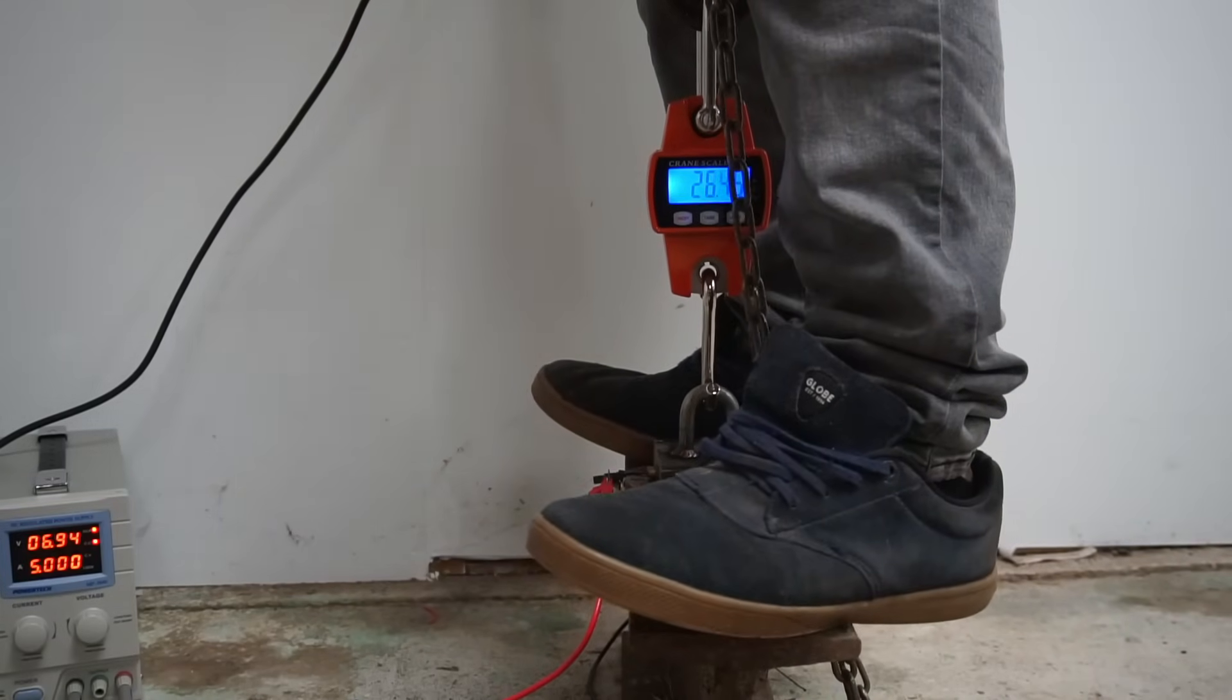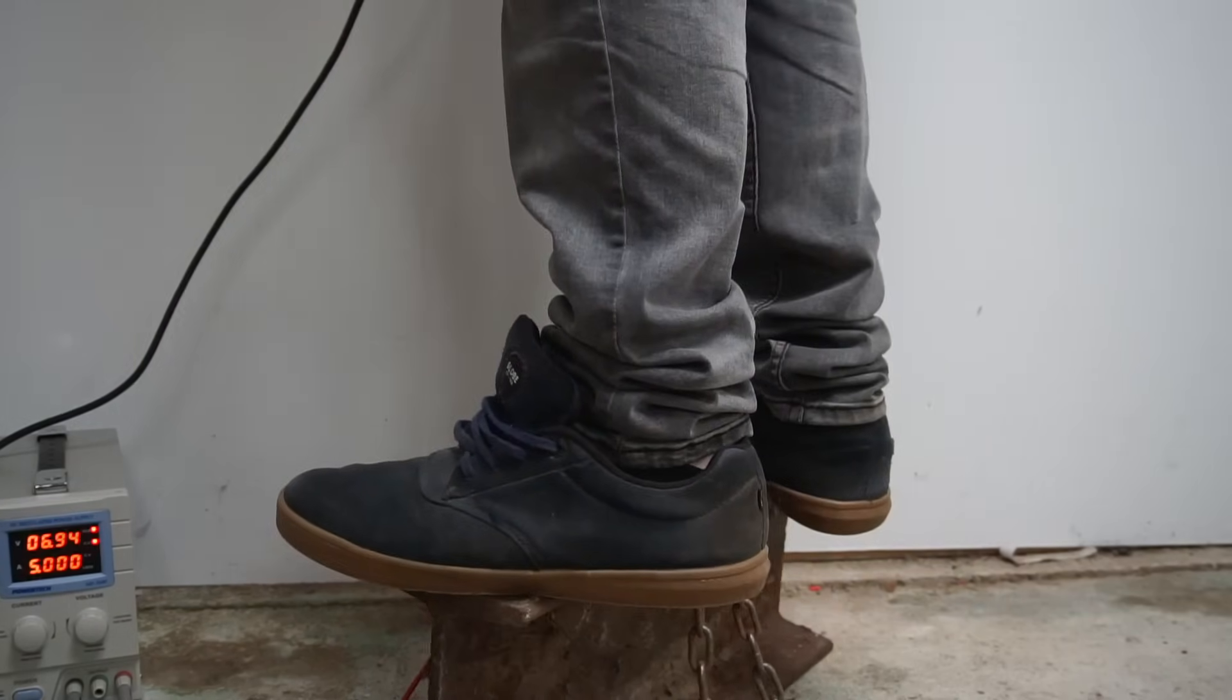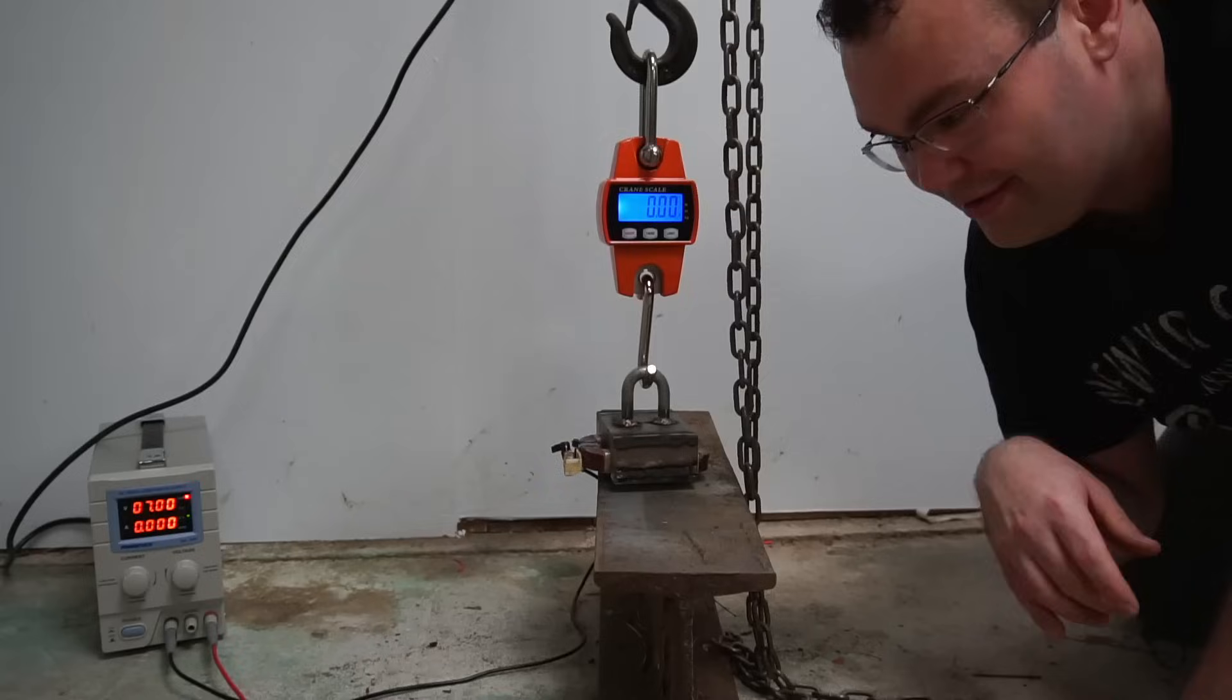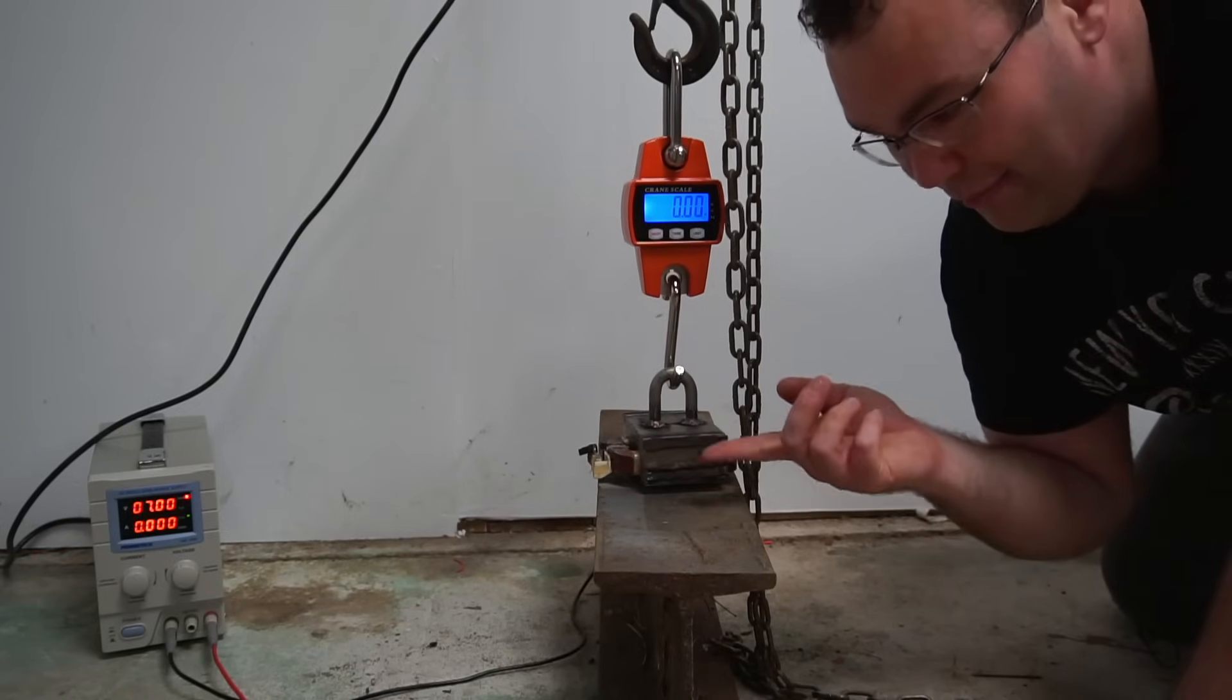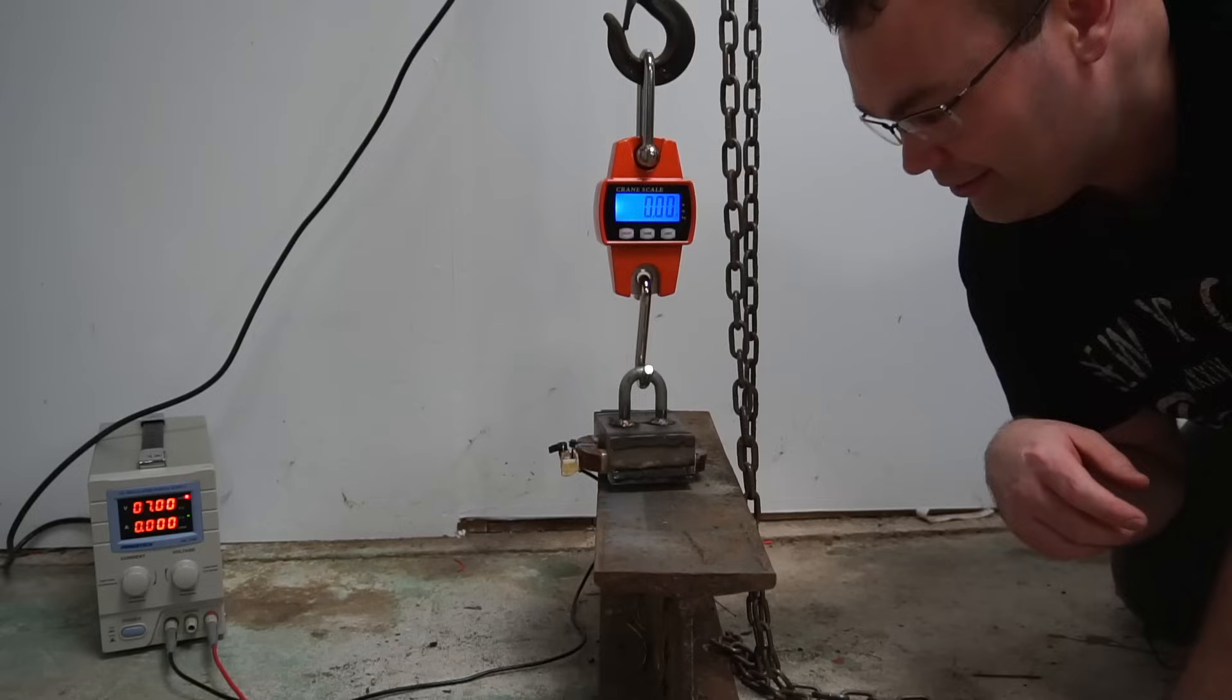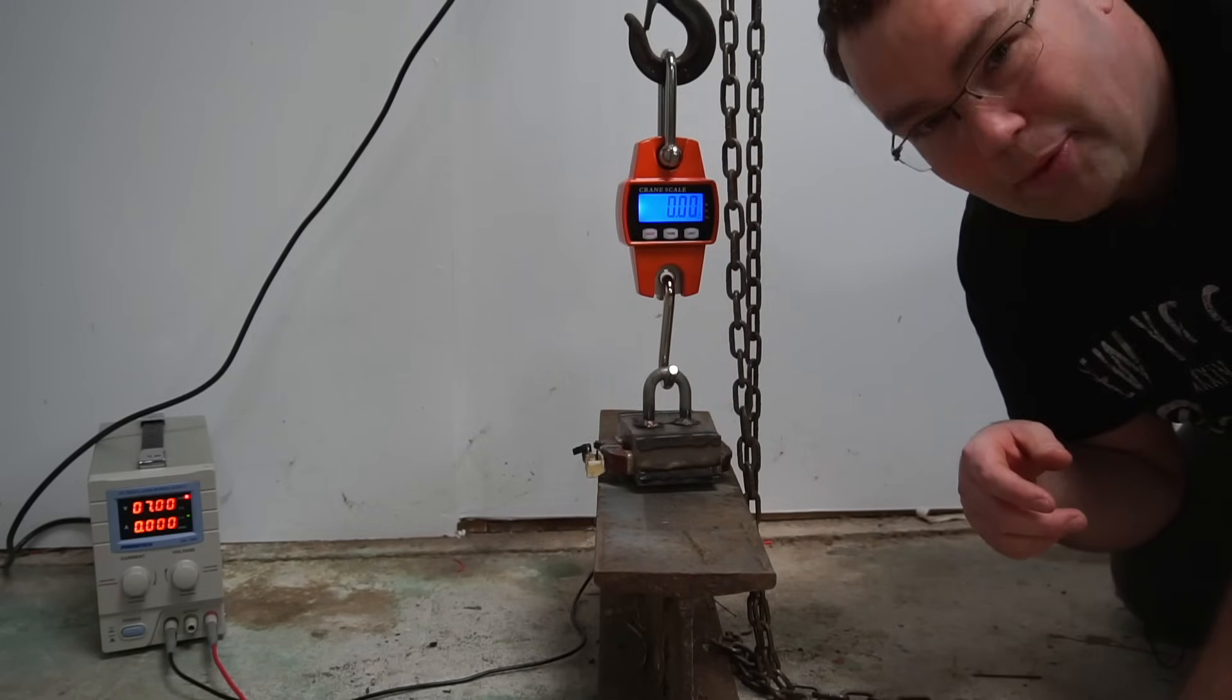All right, here goes nothing. What? Oh nope, don't like that much. I don't know about you, but I'm impressed. I was not expecting this electromagnet to be able to pick up the beam and my weight with only 5 amps of current running through the core. Clearly I have to scale up this test to something much heavier.